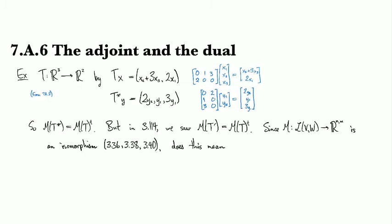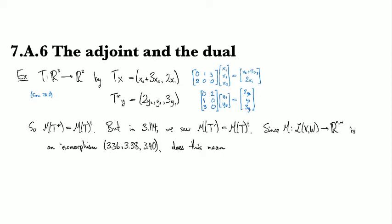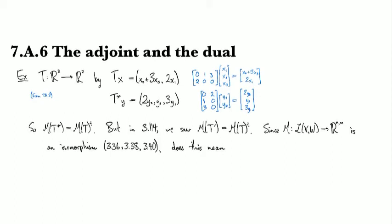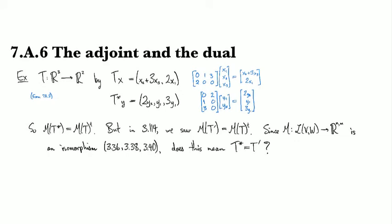So then if it's an isomorphism, then you think that if you have mt prime equal to mt star, then you could strip away the ms because if it's an isomorphism, it's invertible. And that means you can take the ms off, right? So the question is, does this mean that t star is equal to t prime? What the heck is exactly going on?